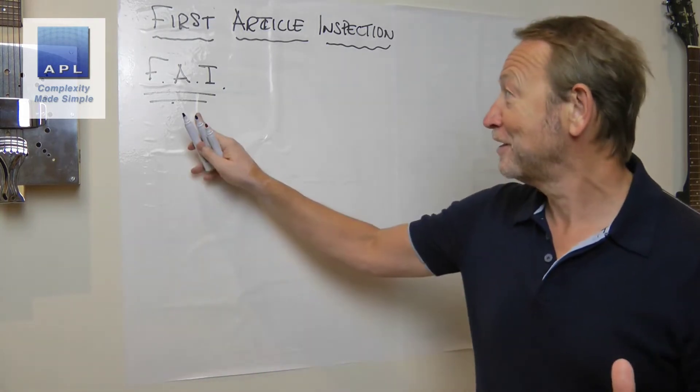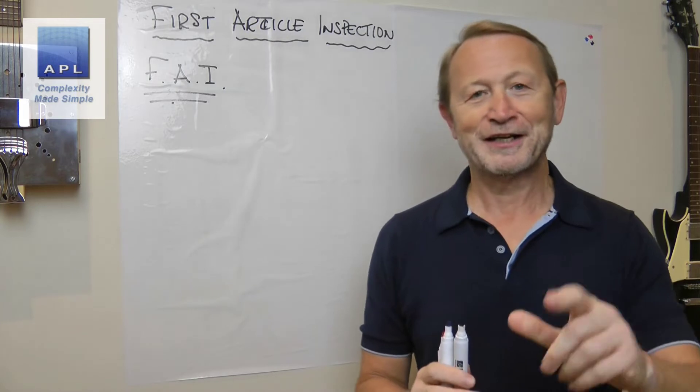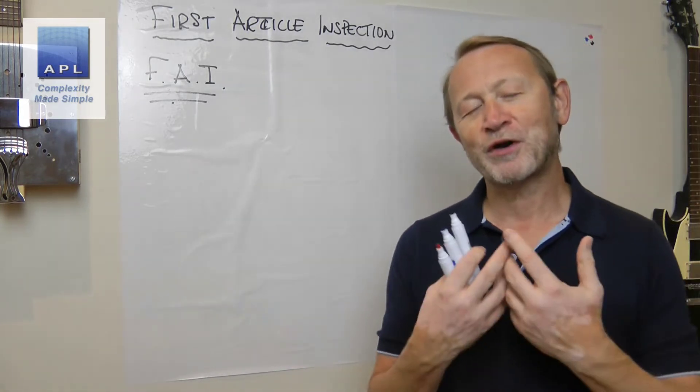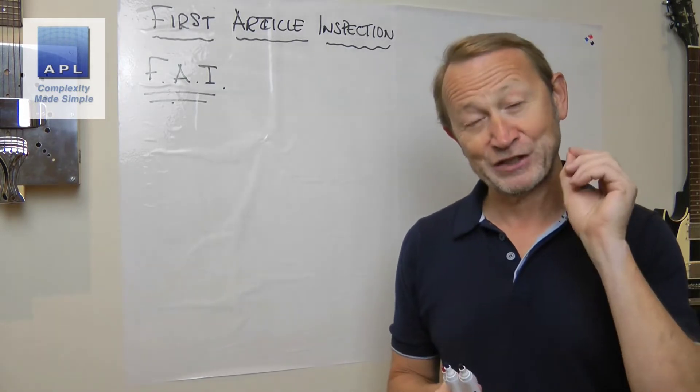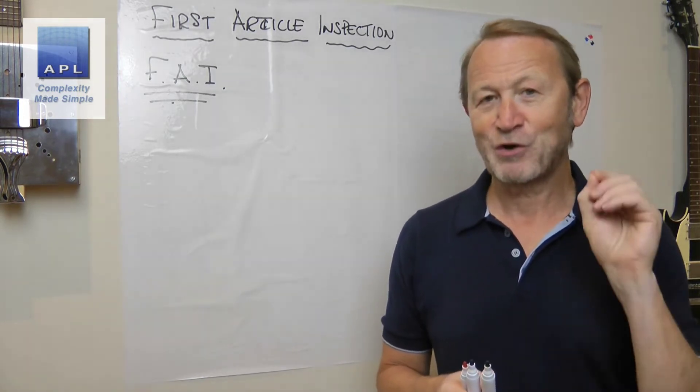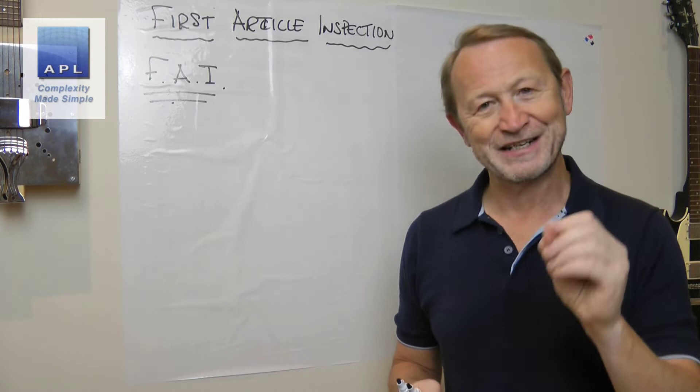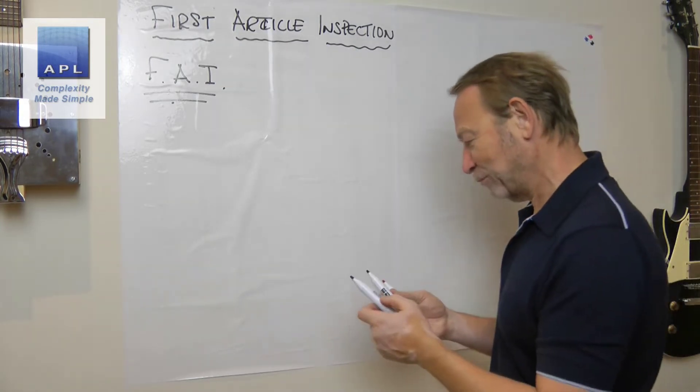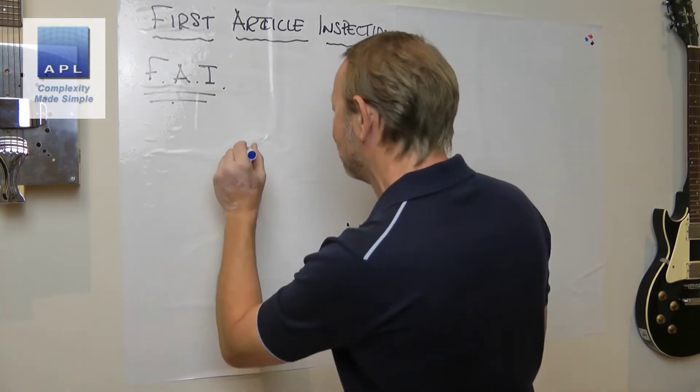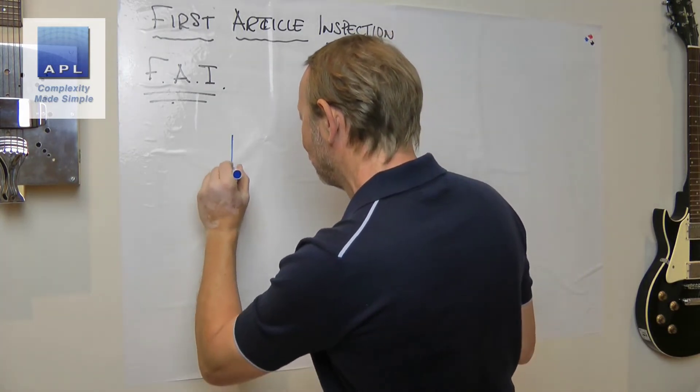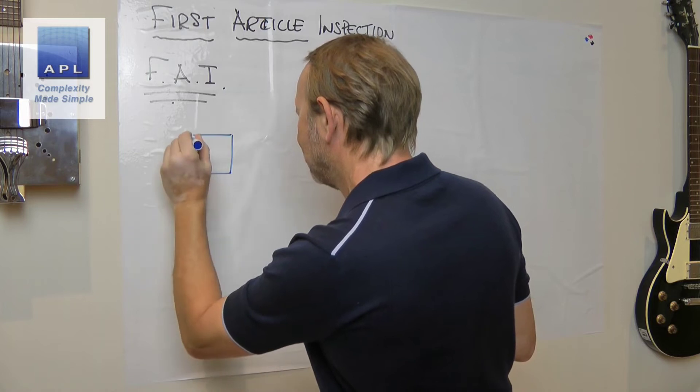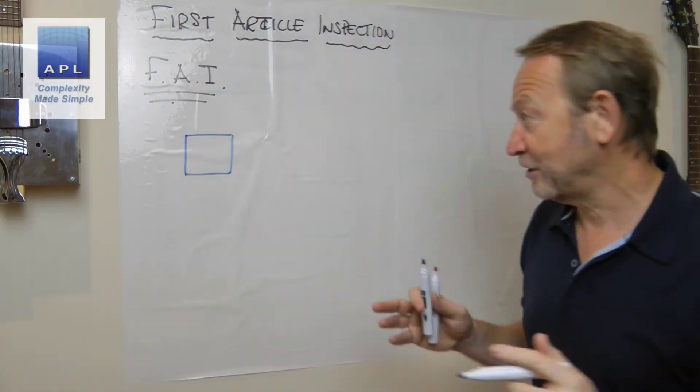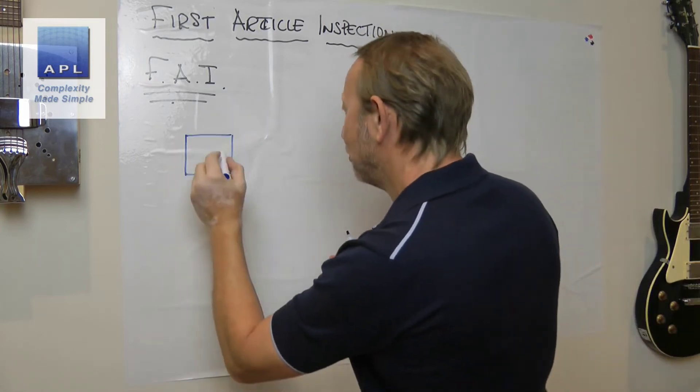Let's talk about what a First Article Inspection is really capable of doing, what it's for, and what it's definitely not for. In order to do this, I'm going to draw a little product. It's been a long time since I've done any technical drawing, but let's assume that we're making a piece on a five-axis machining center. We're machining a block with round spigots on the end.